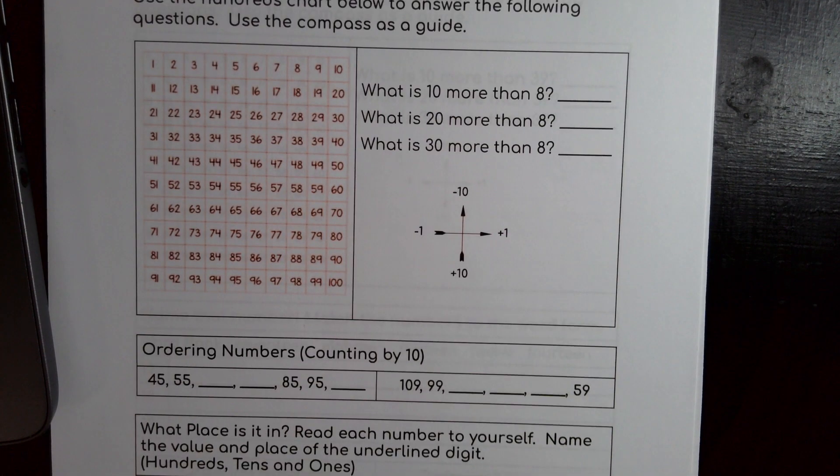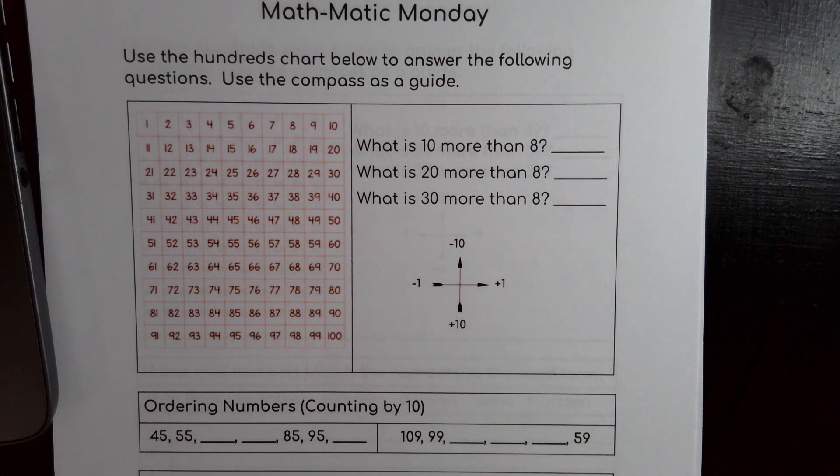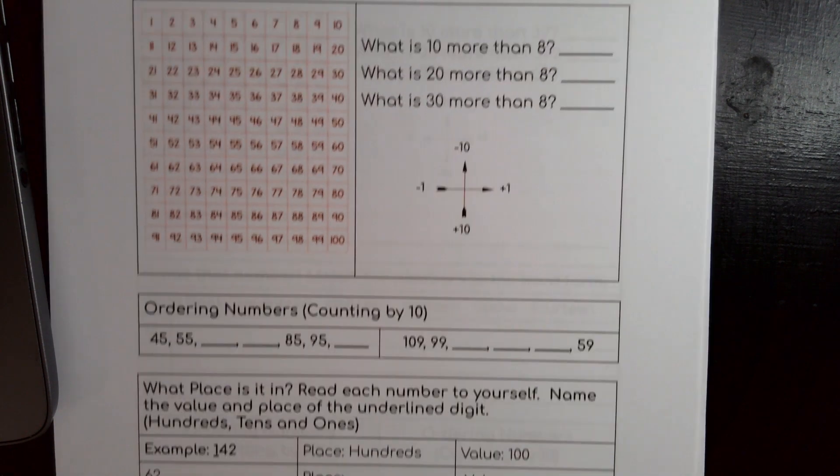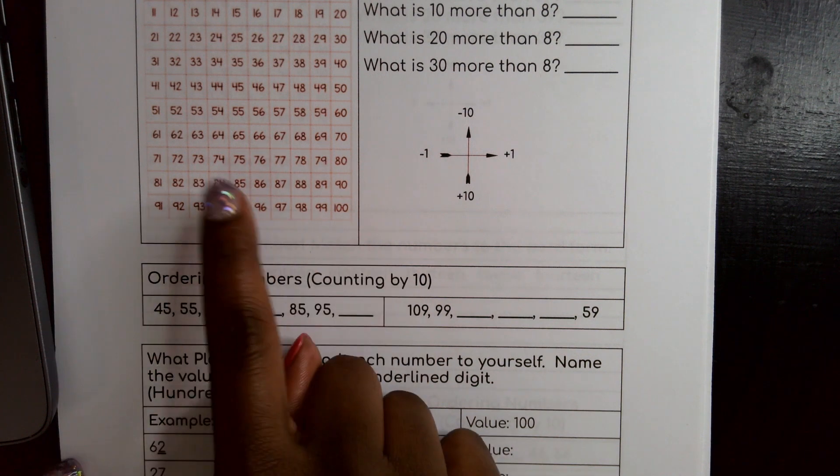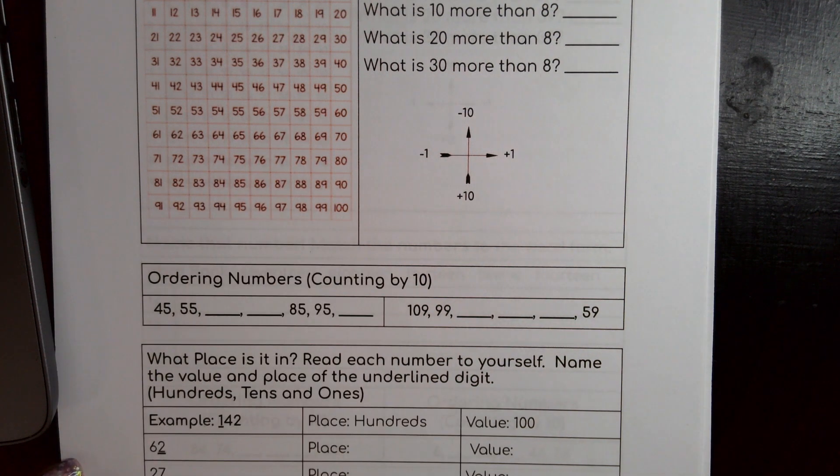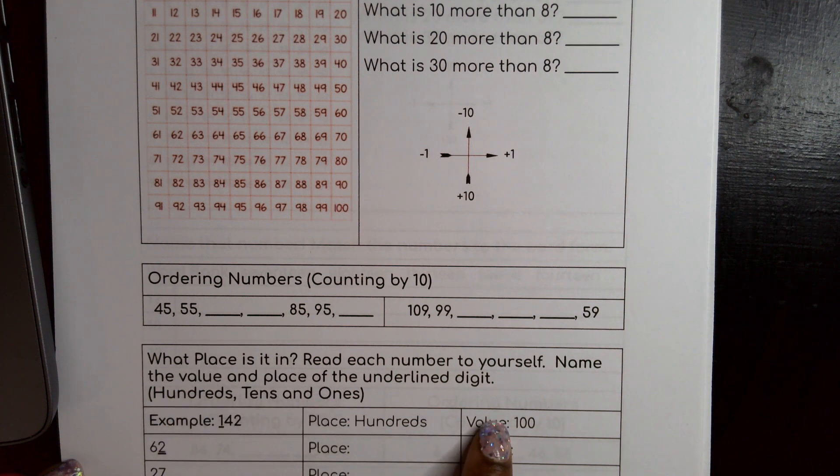So the first thing we are going to do is we're going to use a hundred chart to help us add. Then we're going to order numbers and we are counting by 10. We can use our hundred chart to help us with that. And then down at the bottom we are looking at the place and the value of numbers.